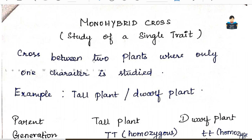The monohybrid cross studies a single particular character. In Mendel's experiment, the organism used is a garden pea plant. In the garden pea plant, we study one character at a time — two plants are crossed based on one particular character. The shape is one character, and the color is one character. Shape can be round or wrinkled, and color can be green or yellow.